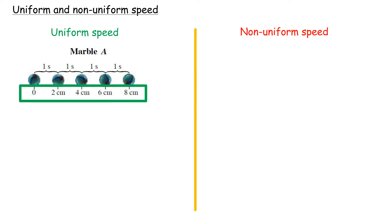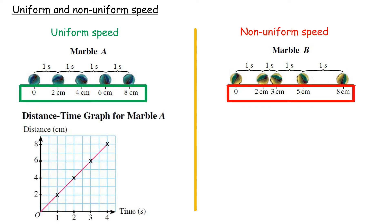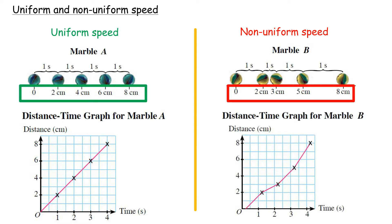Uniform and Non-Uniform Speed. Uniform Speed is the speed that covers equal distance in equal interval of time. Non-Uniform Speed is the speed that covers unequal distance in equal interval of time. Marble A moves at equal distance in equal interval of time, so Marble A moves at a uniform speed. Marble B moves at unequal distance in equal interval of time, so Marble B moves at a non-uniform speed.